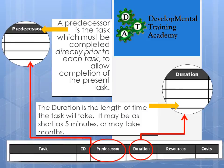Predecessor is the task which must be completed directly prior to each task. If one task is not done, it cannot allow the next task to be done. Predecessors are essential and help create a framework for a complex project. Duration is the timeframe — the length of time you estimate each task will take. It could be as short as five minutes or a task could take months, particularly if you're waiting on people to get back to you.